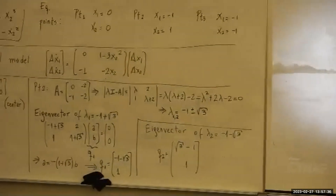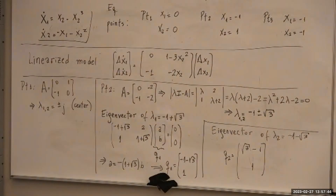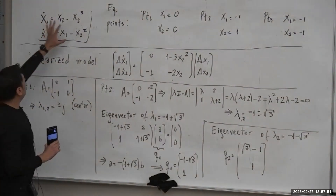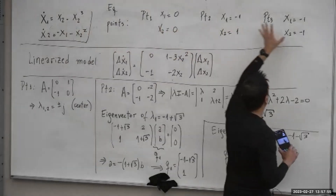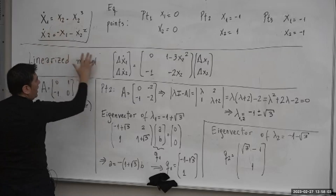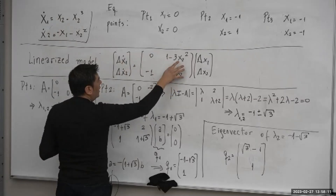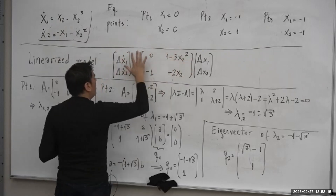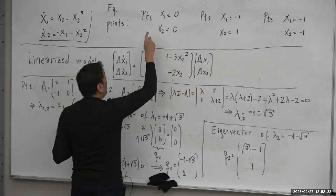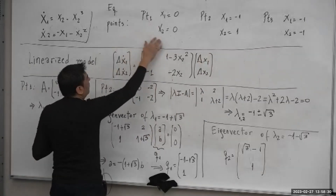The system we were studying had two state variables — I have the summary there. We have two variables x1 and x2, those are the nonlinear functions. We obtained the equilibrium points — in this case three equilibrium points — then we linearized the system around a particular equilibrium point. When we replace the value for x2 at equilibrium point one, two, or three, the linearized matrix system will change. For equilibrium point one, the equilibrium is at the origin.